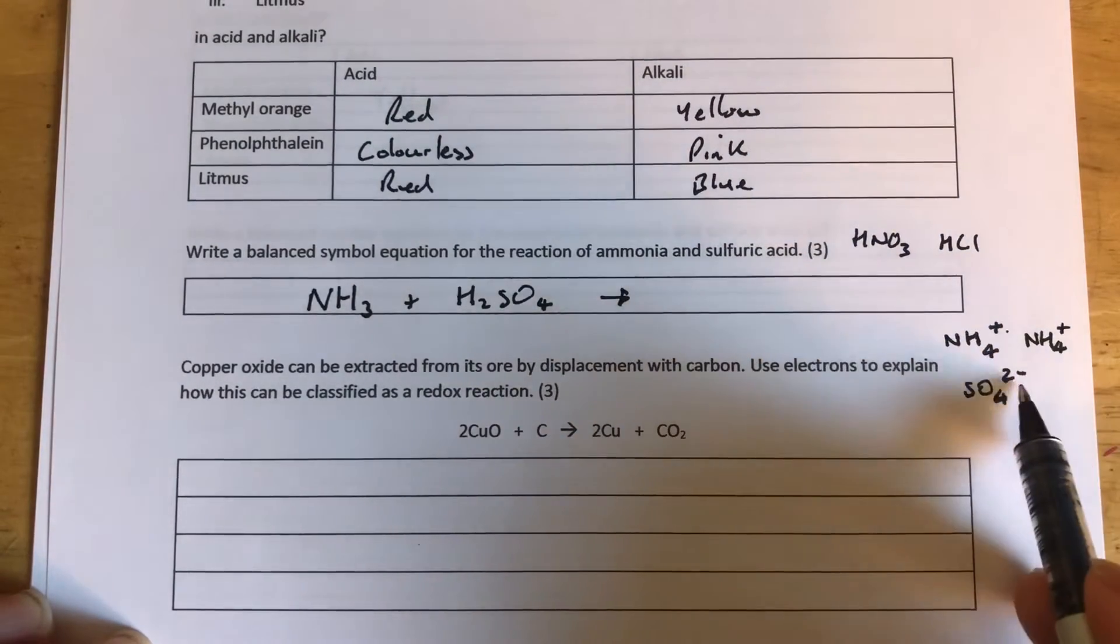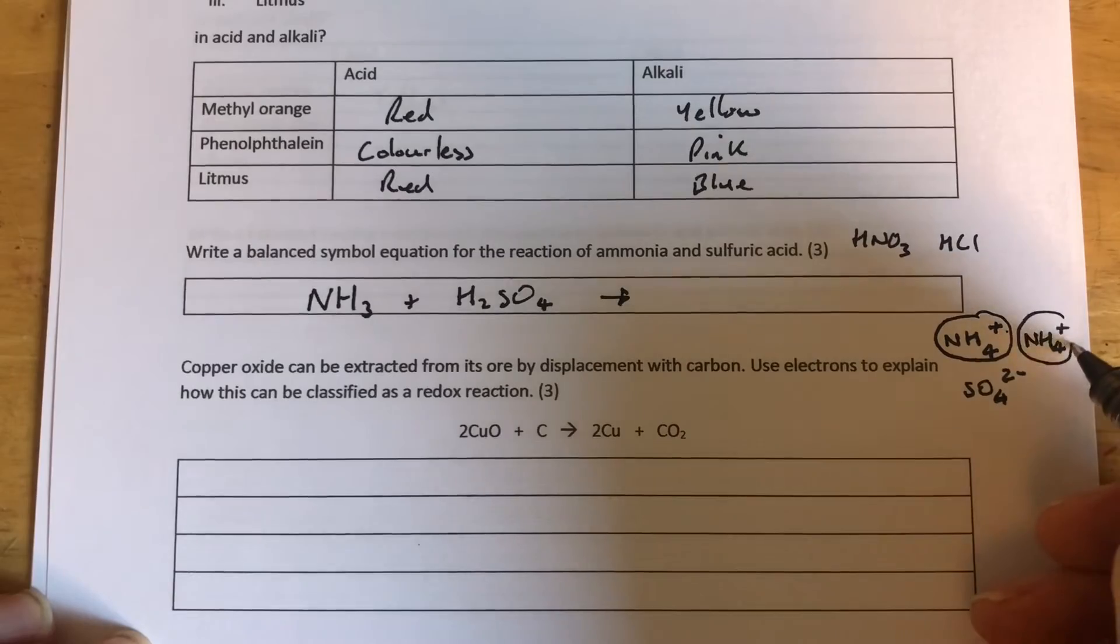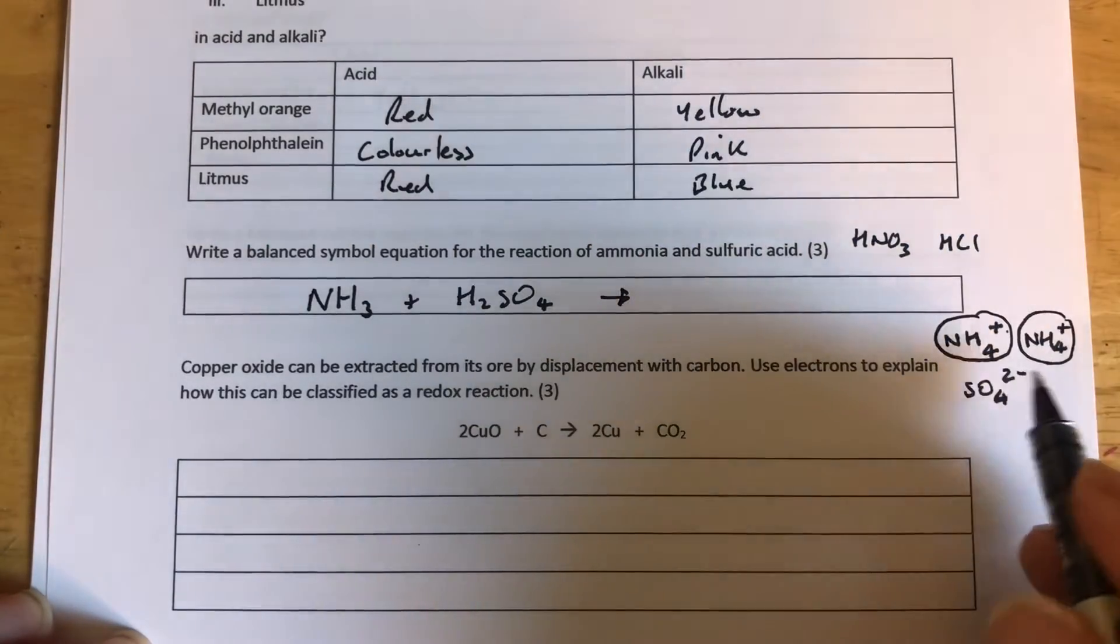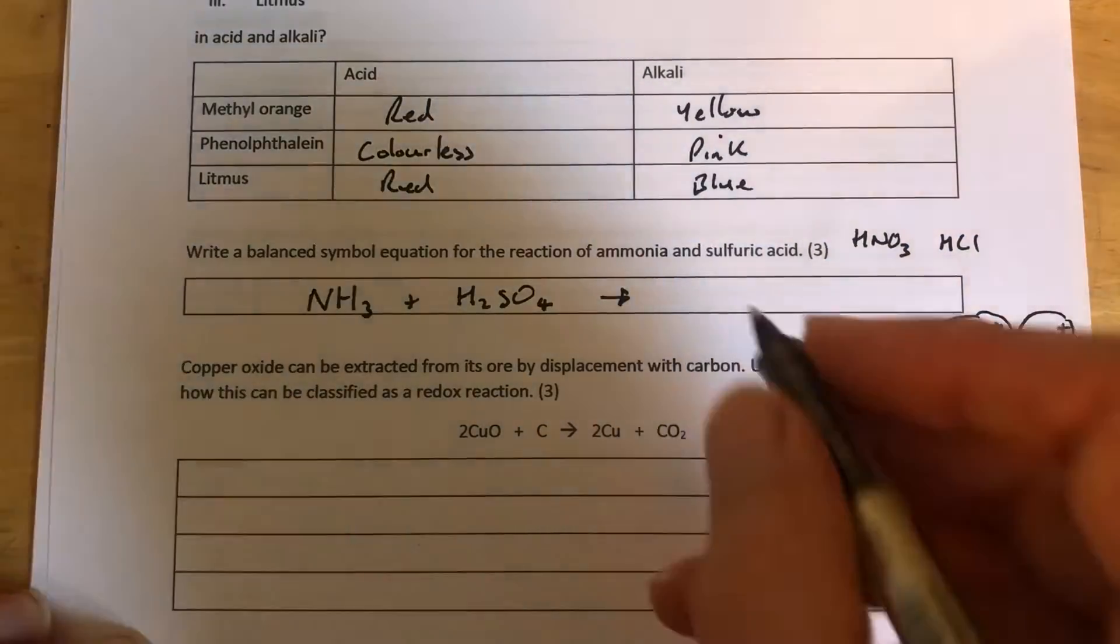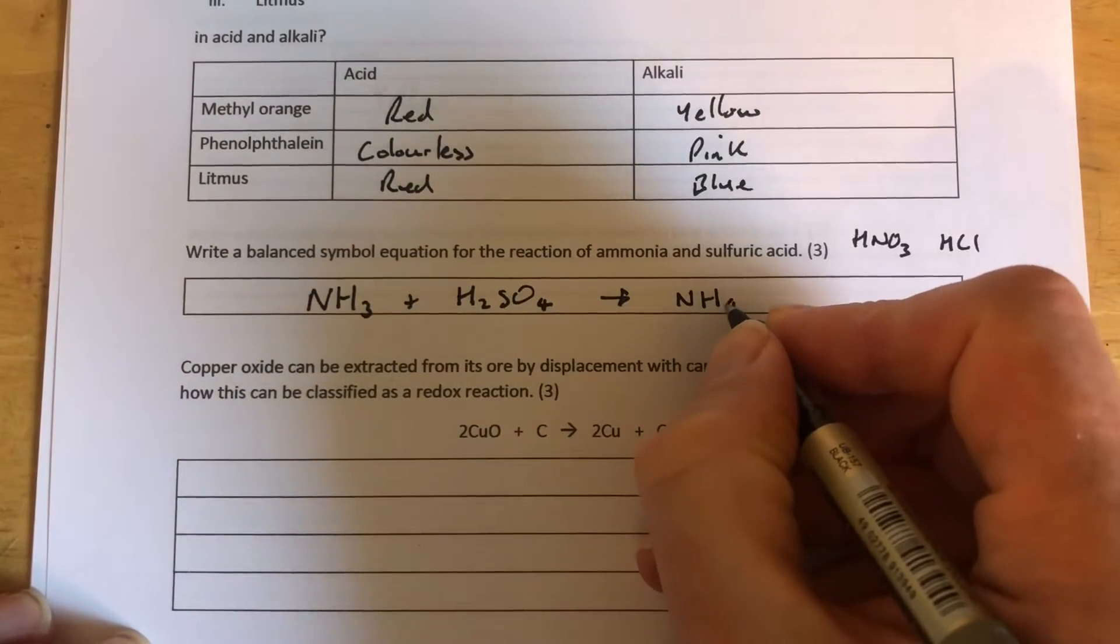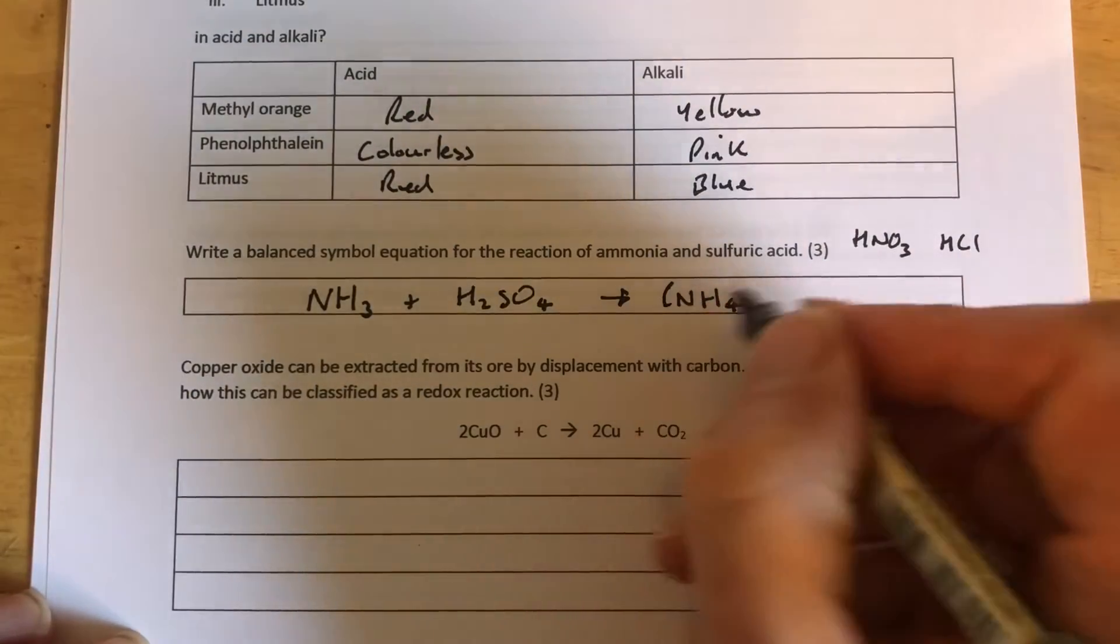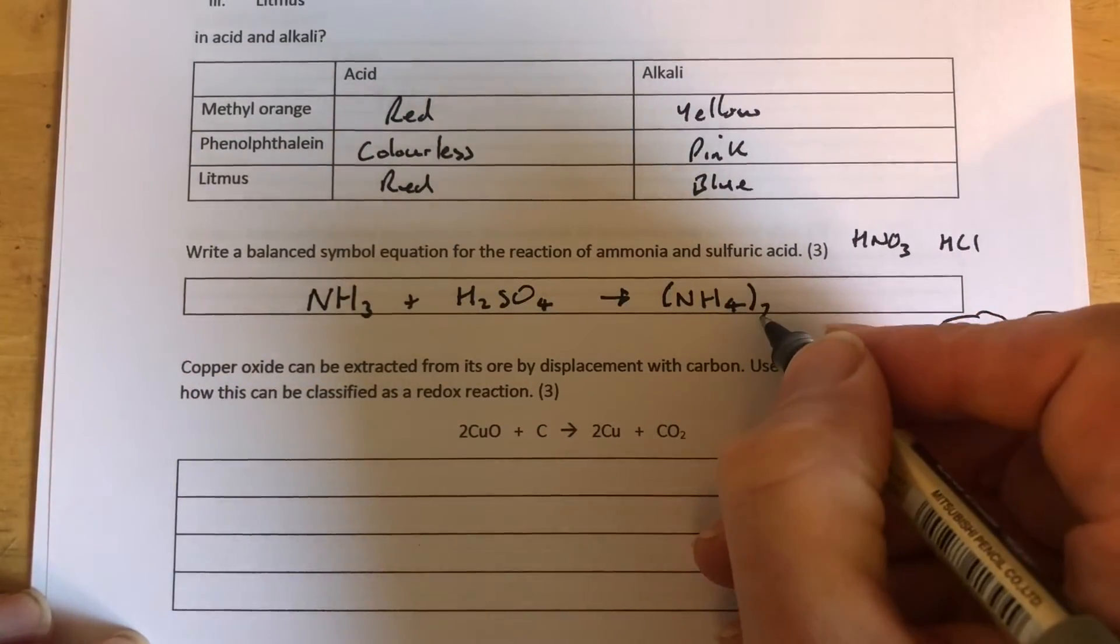Now there's two positives and two negatives, so circle off the ions once you've done it. We've got two ammonium ions. When we've got these more complex ions, where ions are made of more than one atom, like NH4, and we've got more than one of them, we need to put them in brackets. Brackets around it, two outside.